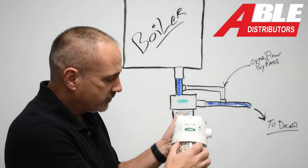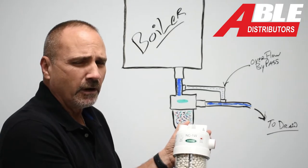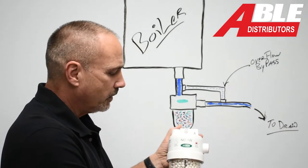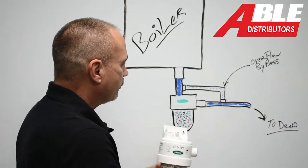You unthread this, change out these pellets once a year, every two years. You can see how fast they wither away.